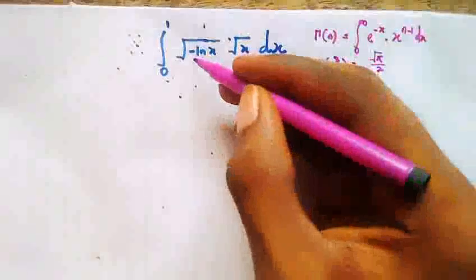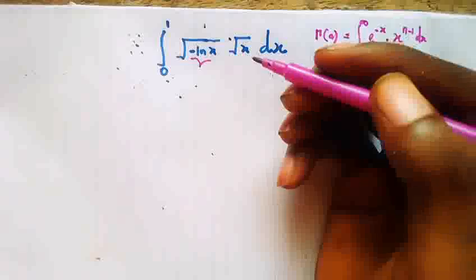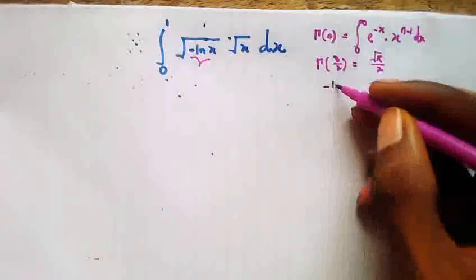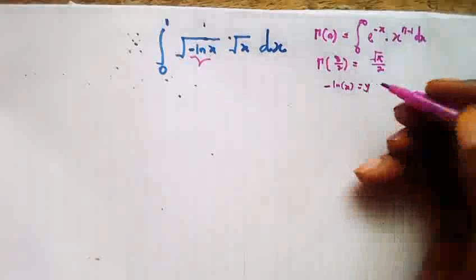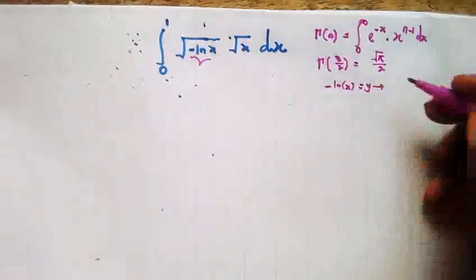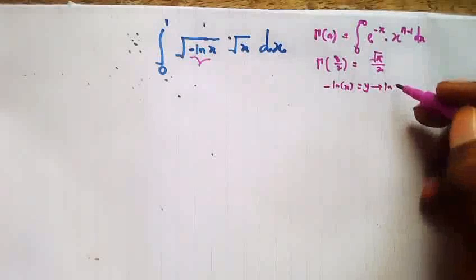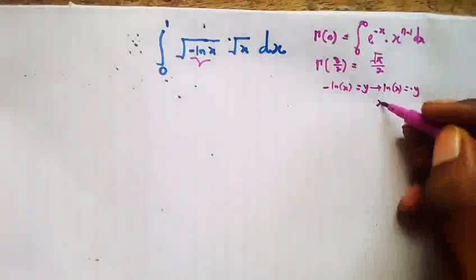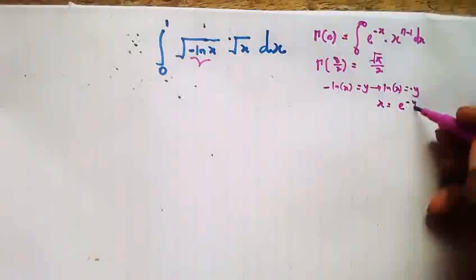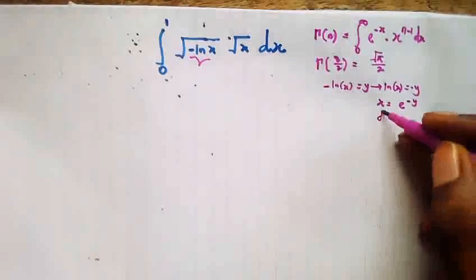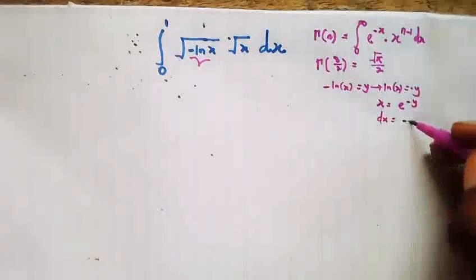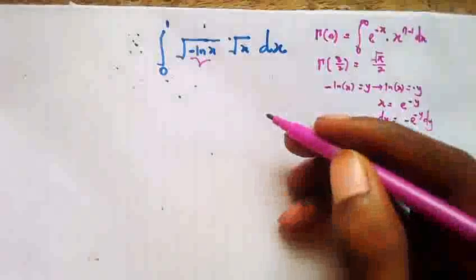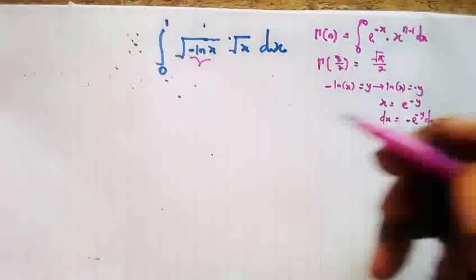We are going to take a substitution by letting the negative natural logarithm of x equal y. So the natural logarithm of x equals negative y, which gives us x equal to e raised by negative y. Differentiating both sides, dx equals negative e raised by negative y dy.